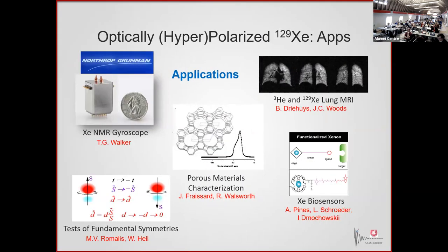Here are some of the applications. My colleague at Wisconsin has developed an NMR gyroscope that actually flies in defense satellites. It has a little light source inside and polarized xenon that is set precessing in a small magnetic field. That precession frequency reads out as the rotational acceleration of the device — a really tiny gyro. These precessing noble gas spins don't interact very much, so in a nice uniform field they're a great clock. Heavy noble gases are also great platforms for looking for physics beyond the standard model — for instance, permanent electric dipole moments, which is an ongoing exploration in our field. We also do porous materials characterization by NMR.